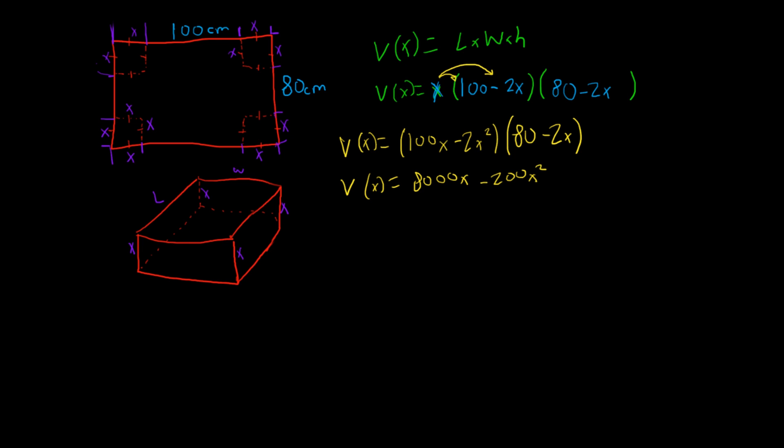Then we got negative 2x squared times 80. That's going to be negative 160x squared. And then negative 2x squared times 2x. That's going to be positive 4x cubed. So, if you're going to rewrite this into something that you're more familiar with in ax cubed plus bx squared plus cx plus d format,